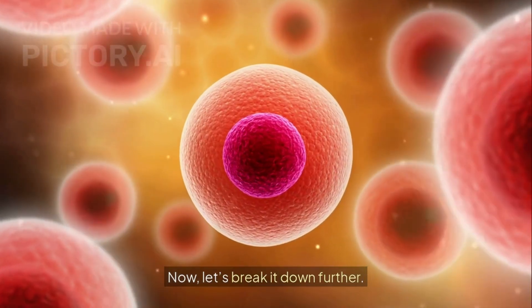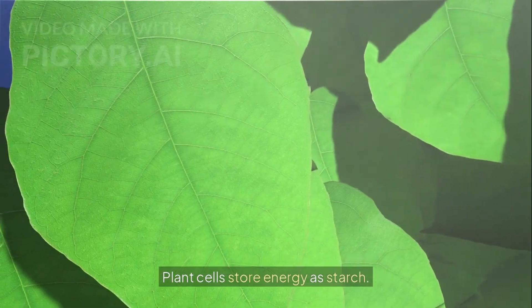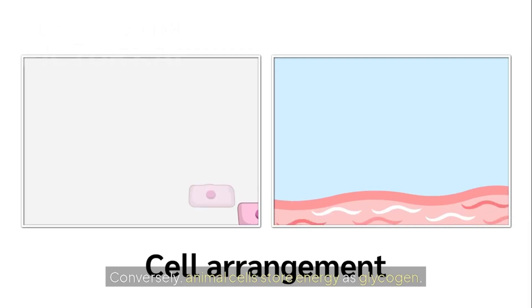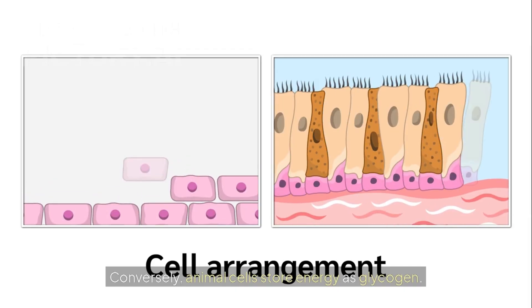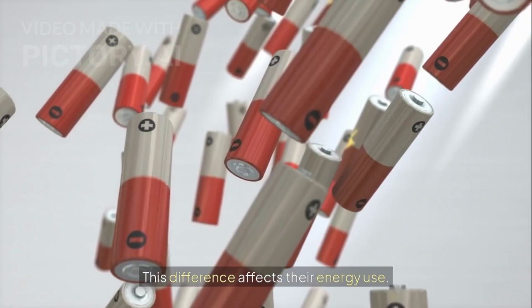Now, let's break it down further. Plant cells store energy as starch. Conversely, animal cells store energy as glycogen. This difference affects their energy use.